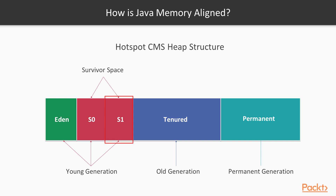There is a threshold for that moving — around 12. If your object is still referenced and has been moved between those survivor spaces at least 12 times, it will be moved to the old generation. The old generation is a memory area for objects that are referenced for a long time — they are not short-lived. Garbage collection in the old generation is started less frequently, because most objects in Java are short-lived, which is why the young generation exists.